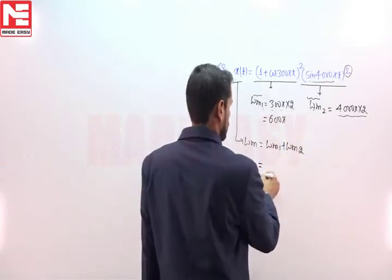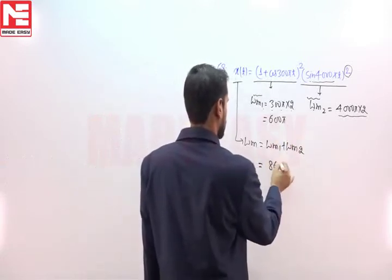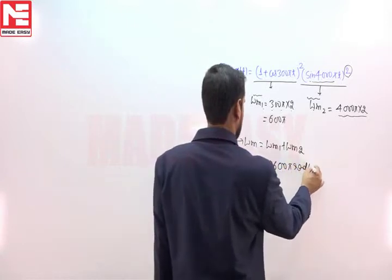Now, if we add these two terms, it will be equal to 8600π radian per second.